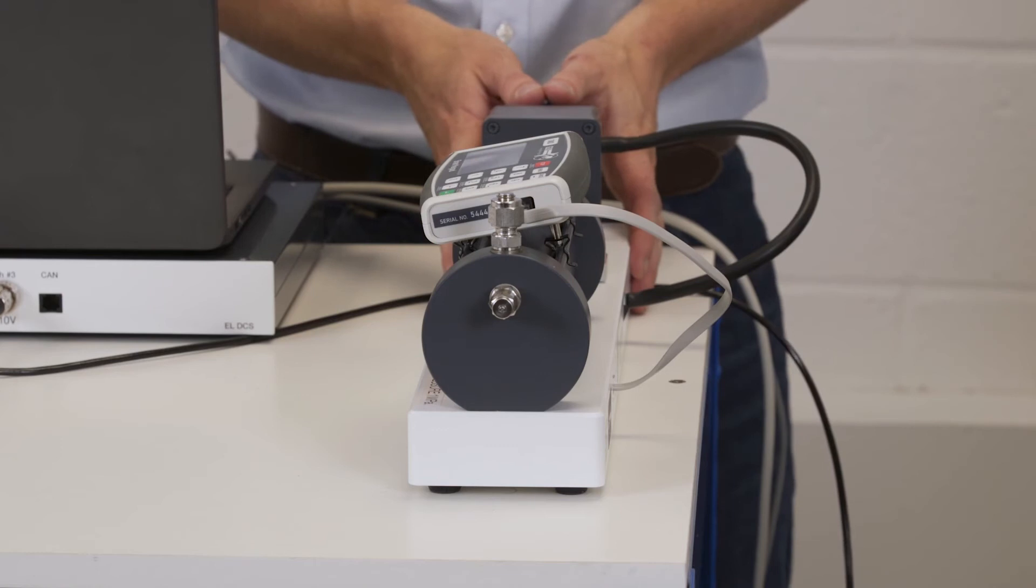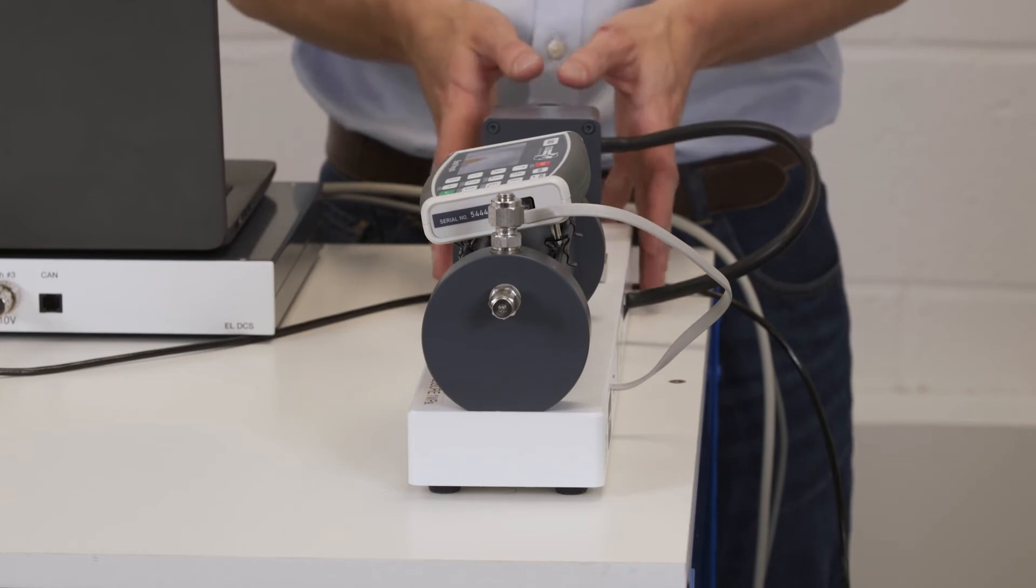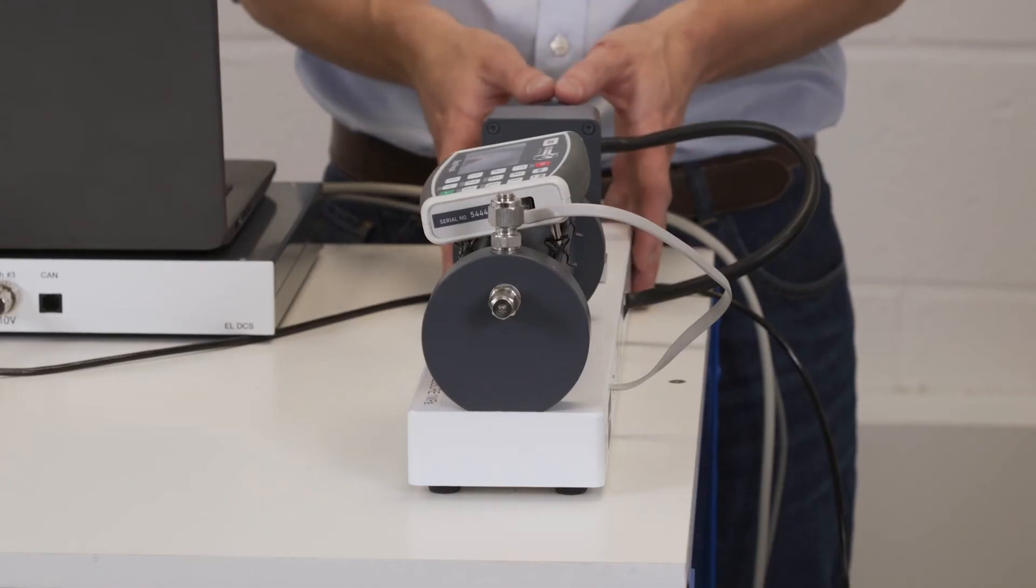The pressure controller is used for our back pressure connection, allowing us to generate pore pressure. This is our enterprise pressure controller ranging up to 1MPa. Other options are available such as our standard version 2 controller which will go up to 4MPa and our advanced pressure controllers which go up to 4MPa as well.